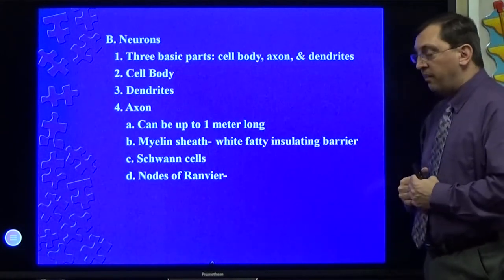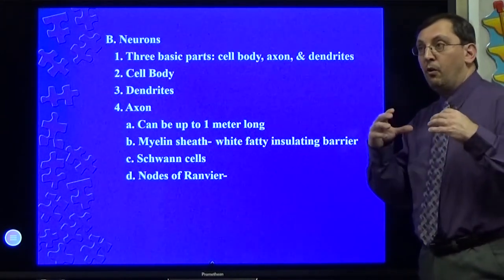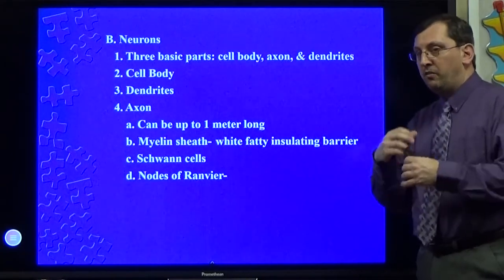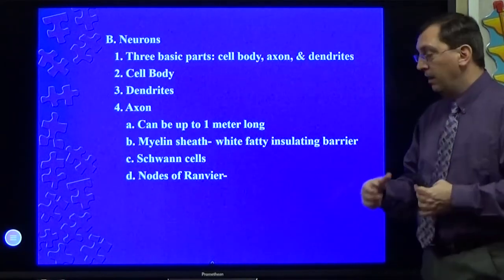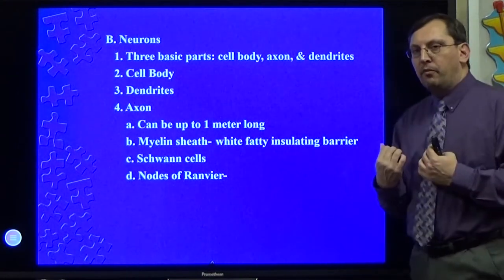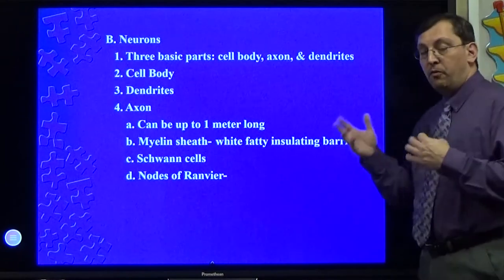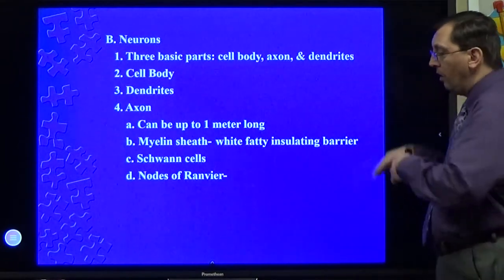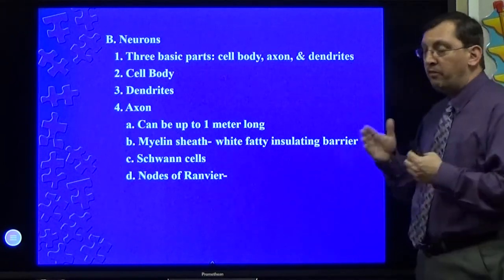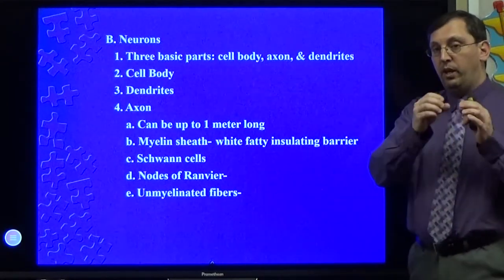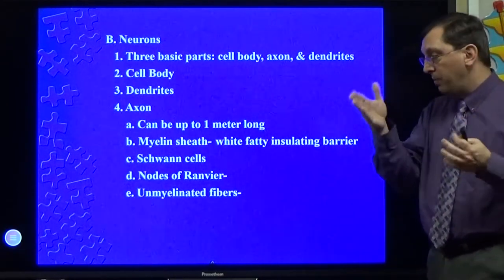One way I can deal with this concept of having a myelin sheath and having it go too slow by being completely insulated, which is great for signal strength but poor for speed, is I can make little gaps and make the signal jump between the gaps to speed it up. Those gaps between the myelin sheath are called the nodes of Ranvier. They're little small gaps that sit between the myelin sheath along the axon to help it speed up.